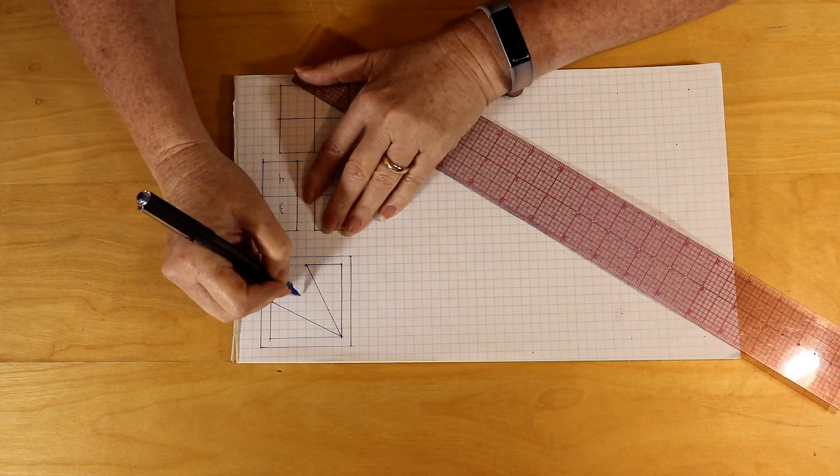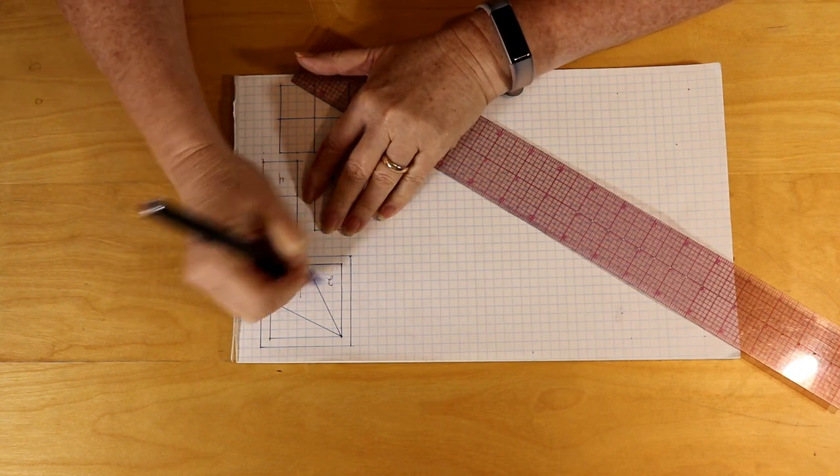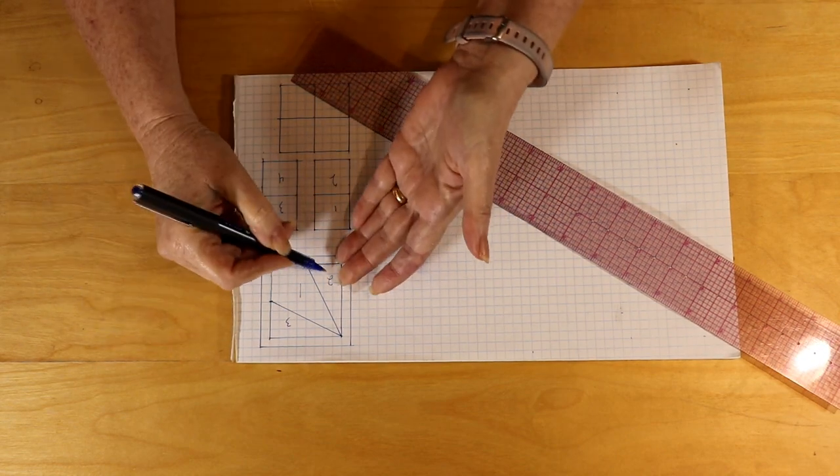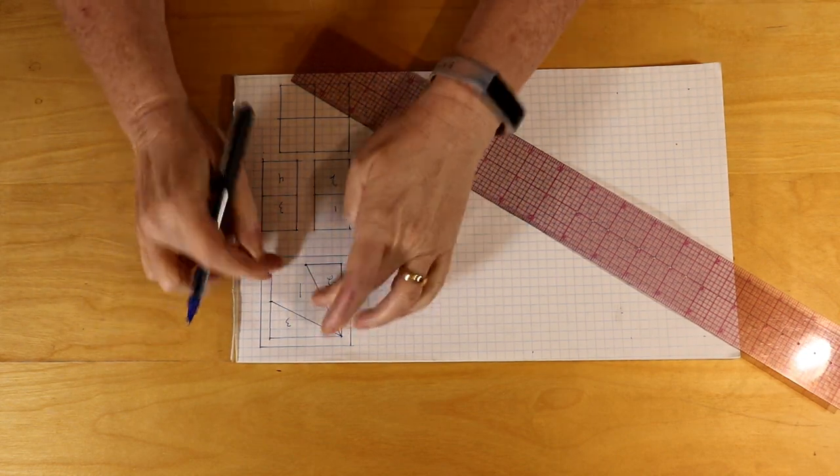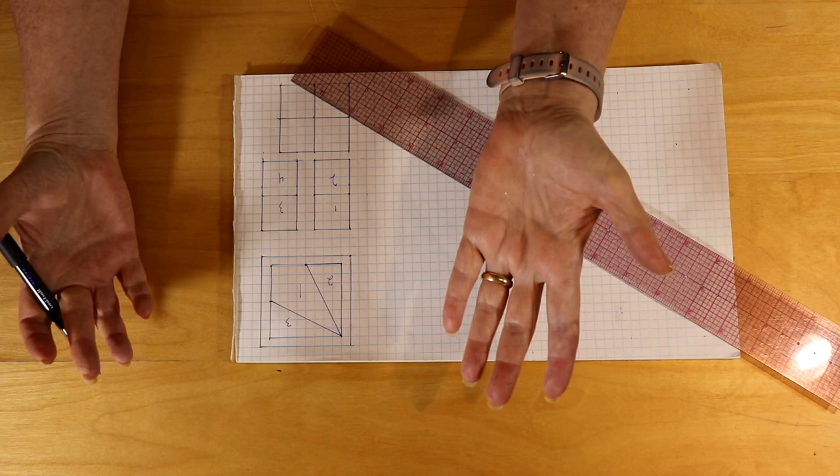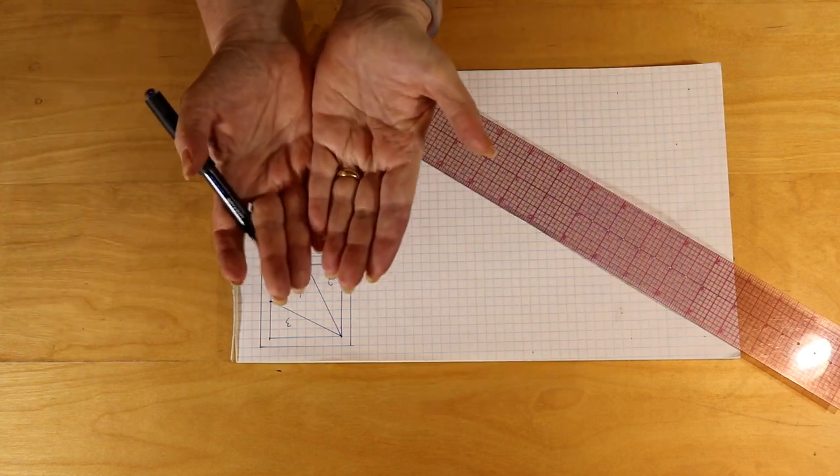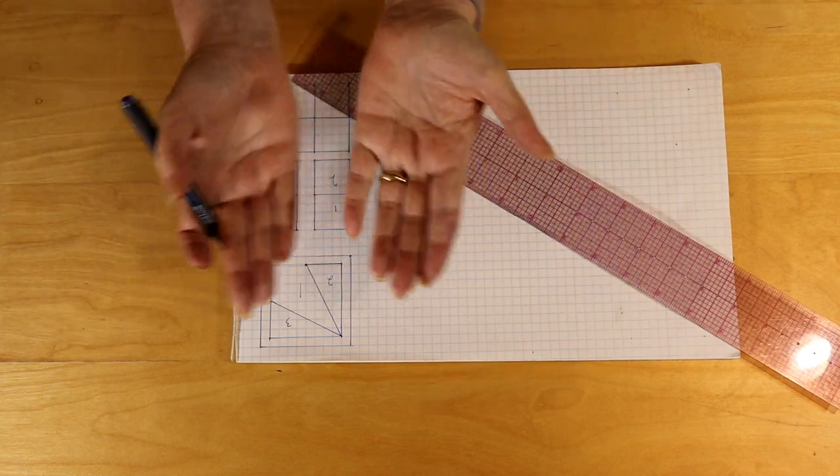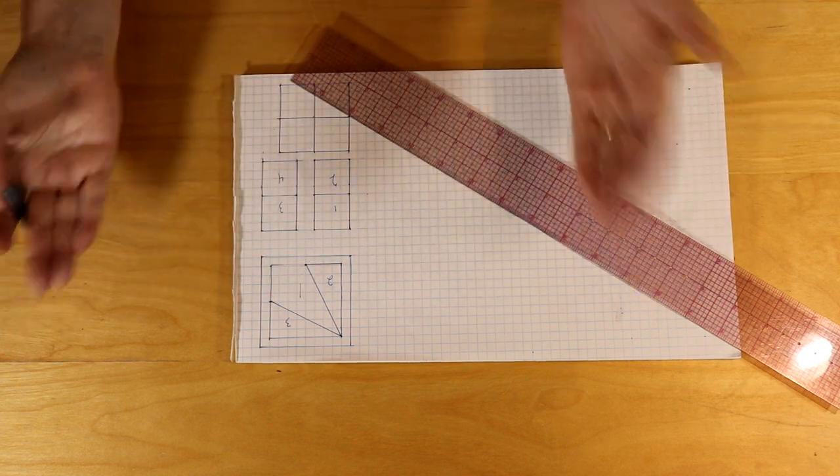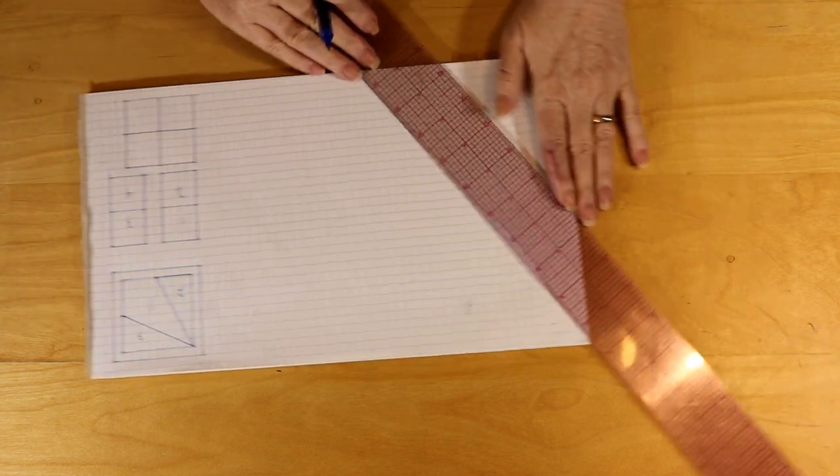And you would label it like one, and then two and three. Now it doesn't matter which one is two and which one is three, but one has to go down first or should go down first because it's the largest piece, and you want the bulk from the seams distributed across the block.